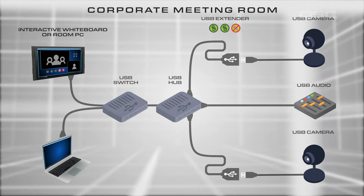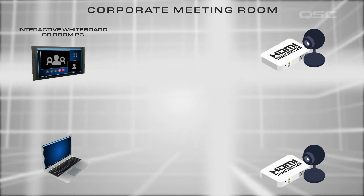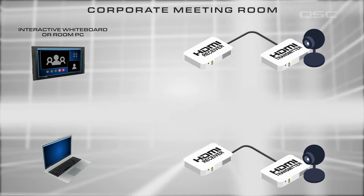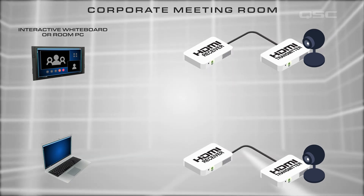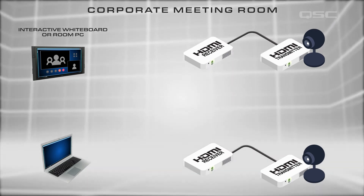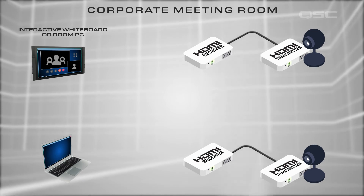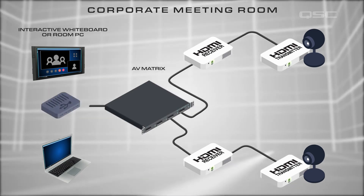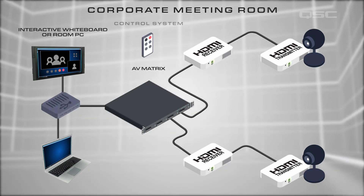Another alternative is to use HDMI cameras, which bring their own pain points. HDMI is also impossible to field terminate, and the room now requires an HDMI video matrix, which will require a control system of its own.